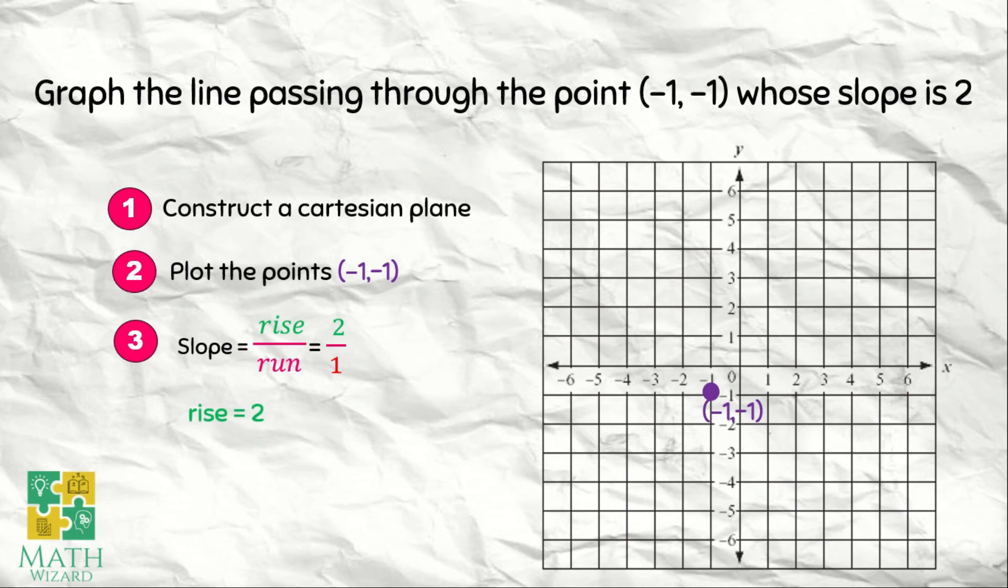So let's count. We have 1, 2. And then the run is positive 1. Kaya movement to the right once. We have 1. And then we have our second point which is (0, 1). Connecting the two dots.